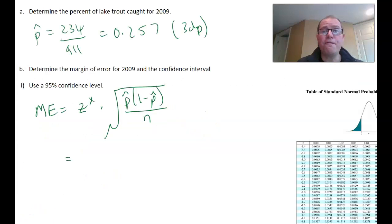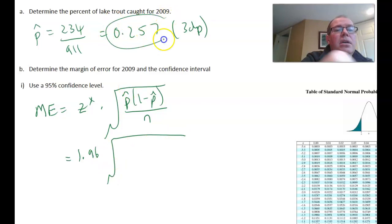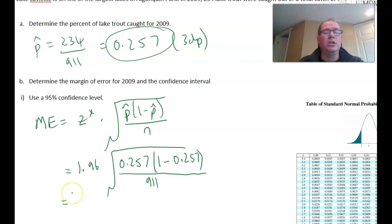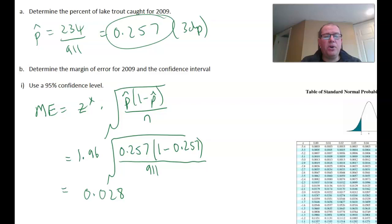Now we can find a 95% confidence interval for that. First, we need to work out our margin of error. Because we're doing a 95% level, the critical value Z star is going to be 1.96 times the square root. My P hat, my estimate, is 0.257. Always remember to put that as a decimal number, not a percentage. The proportion that are not trout is 1 minus 0.257, and then divide by our large sample of 911. We get a value of 0.028.